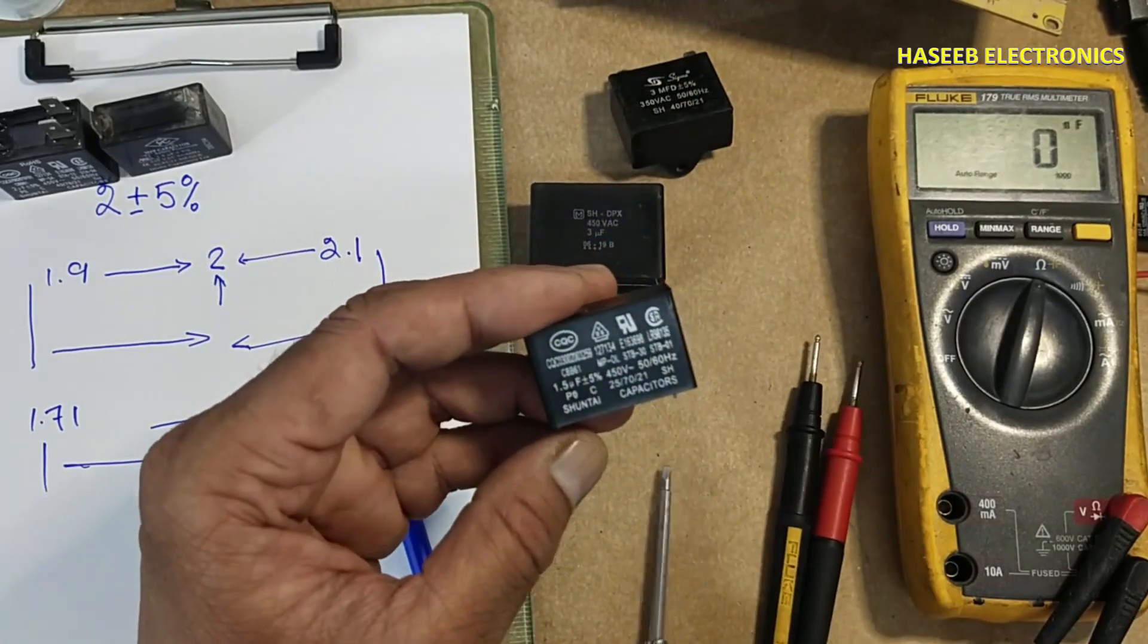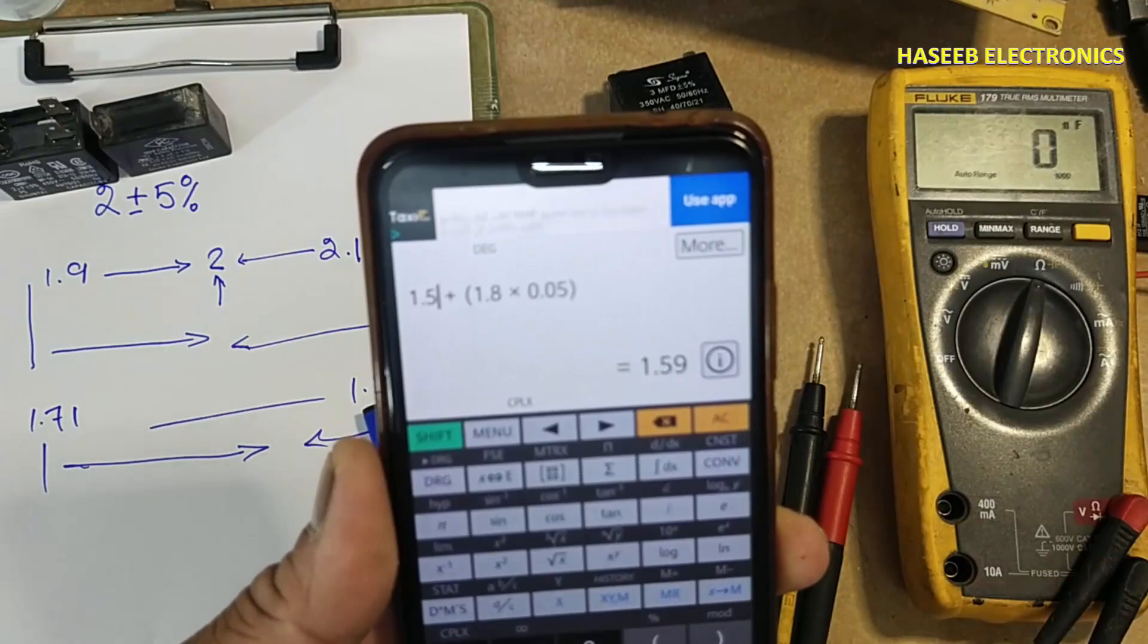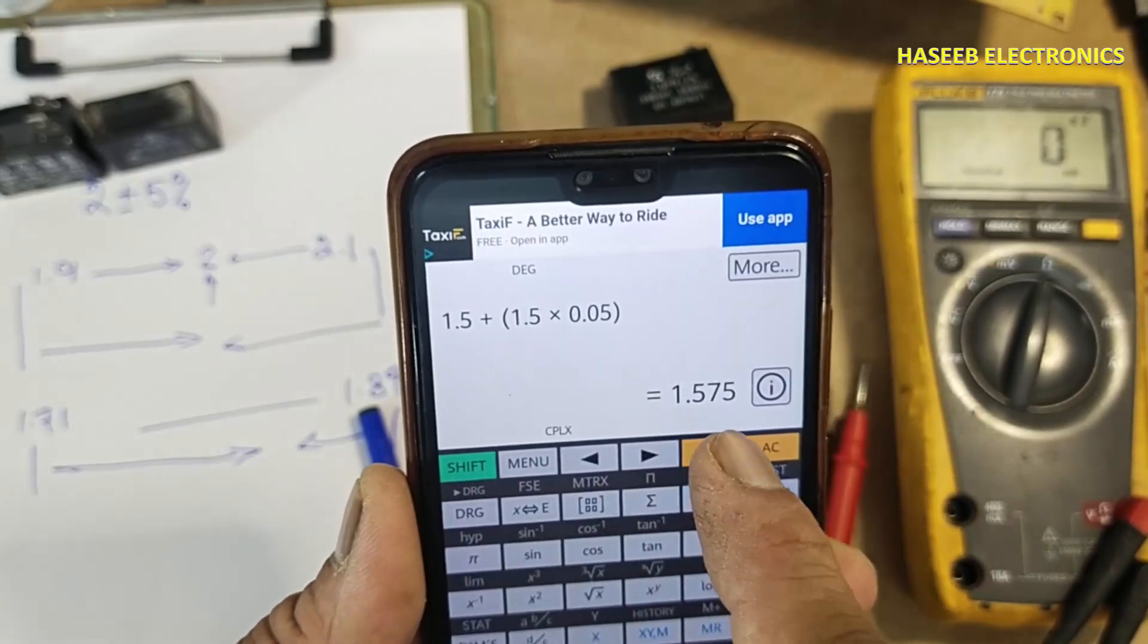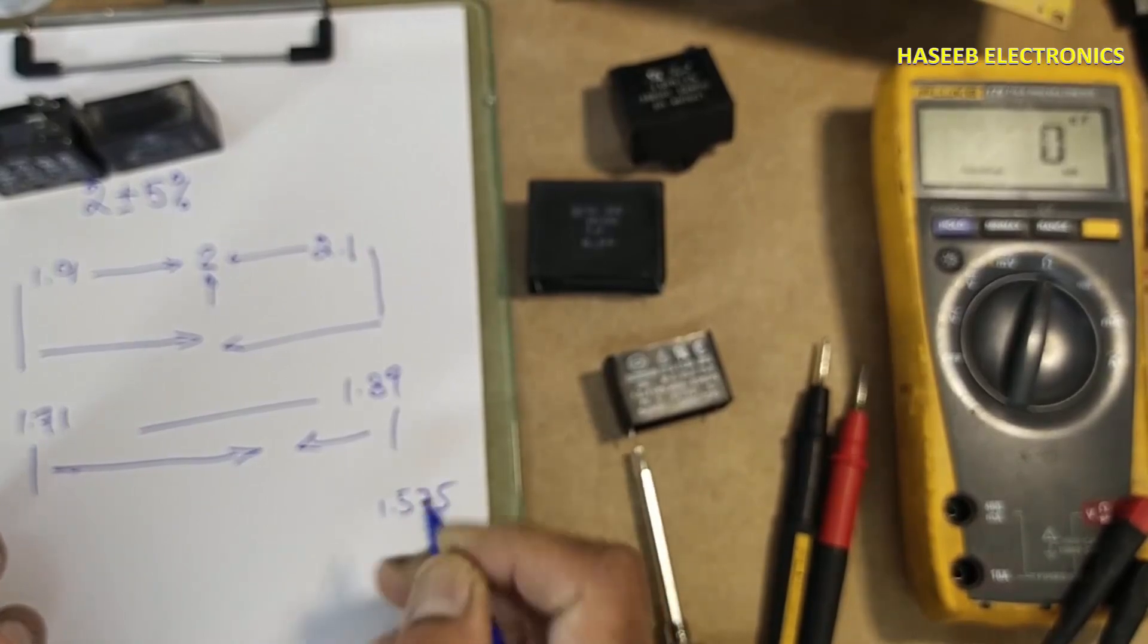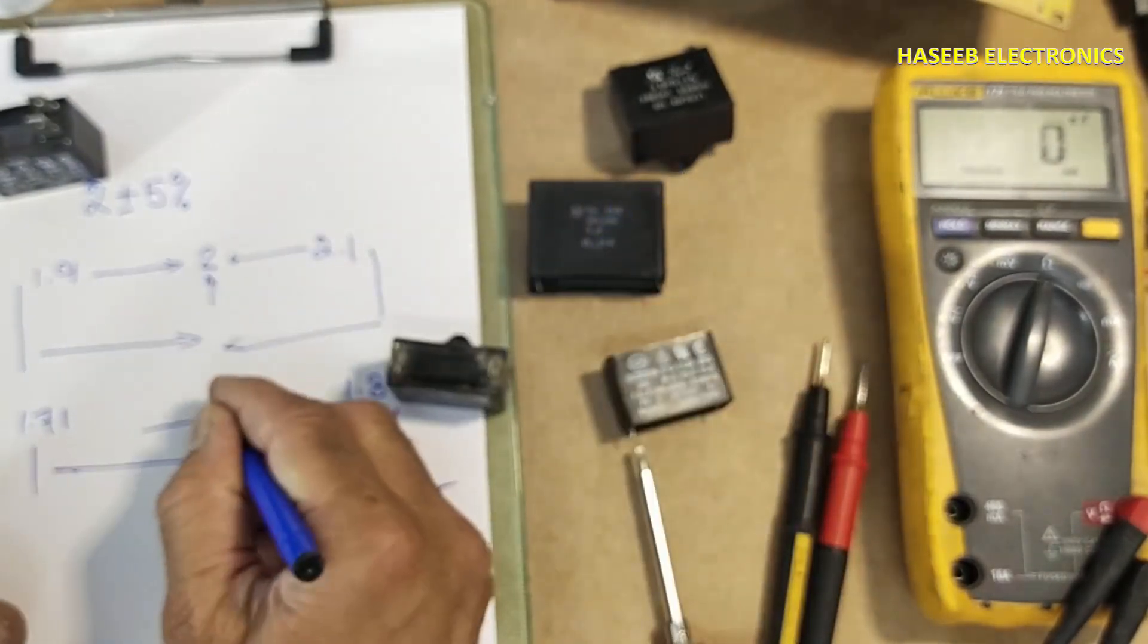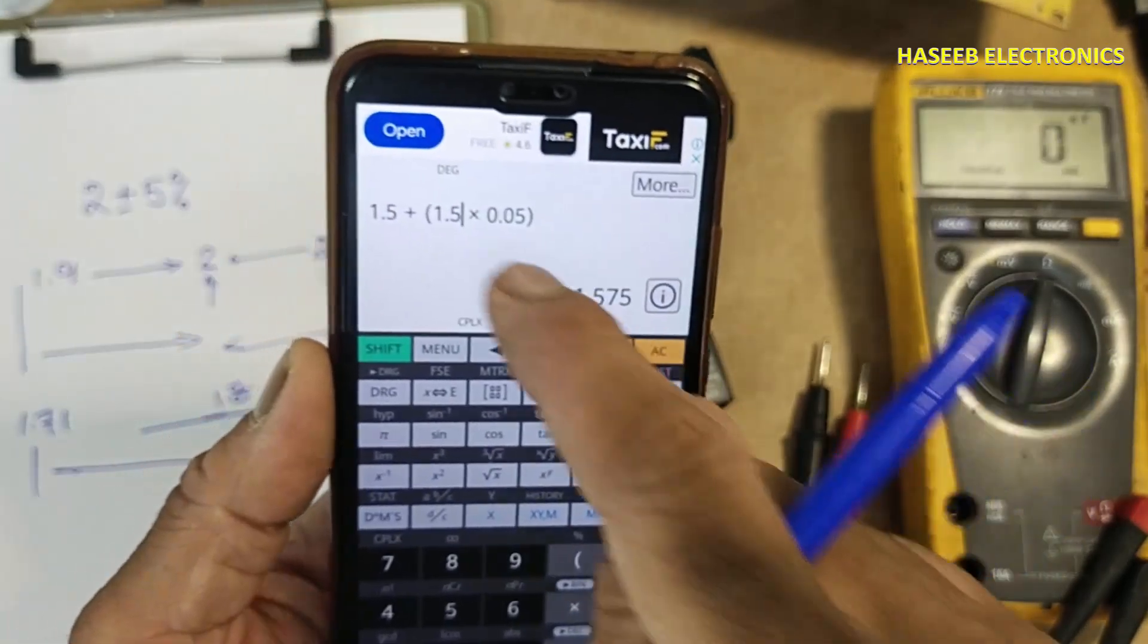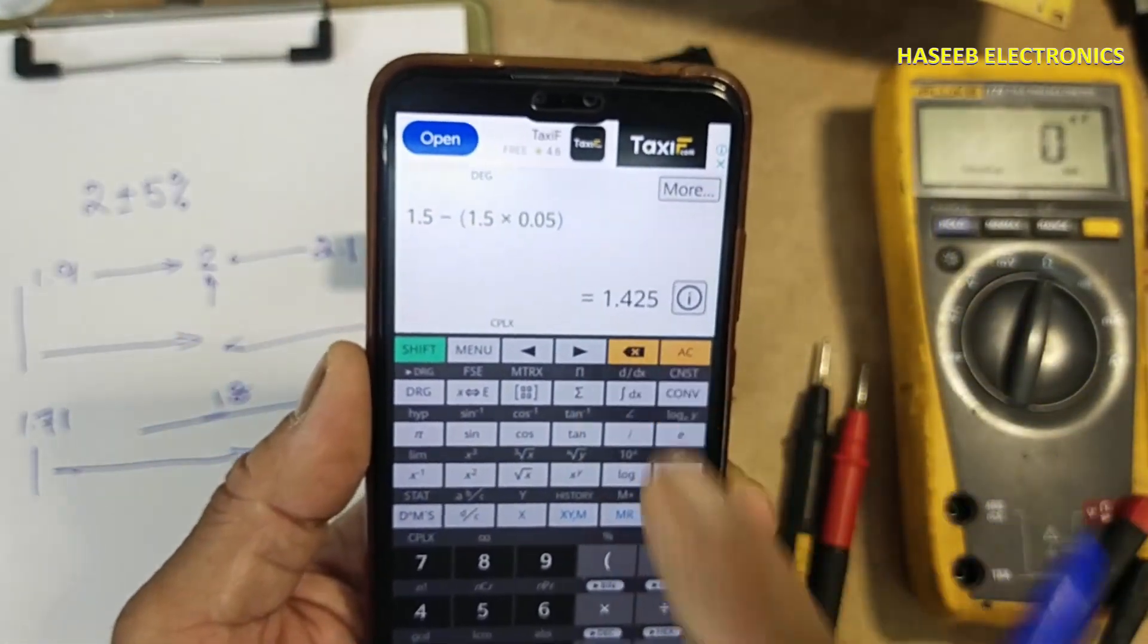This one is 1.5 microfarad plus minus 5 percent. 1.5, upper limit 1.575. This was 1.8, and this one is here, upper limit 1.575, minus 1.425.